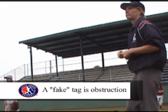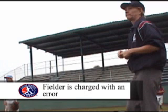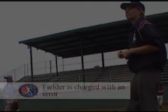If the fielder does not have the ball and simulates a tag on the runner with the intent of making the runner slow down or stop, obstruction can be called. For scorekeeping purposes, an error is charged to the fielder who committed the obstruction.